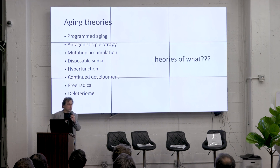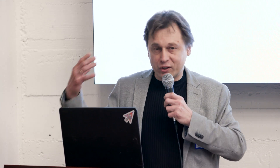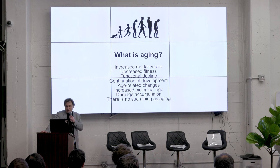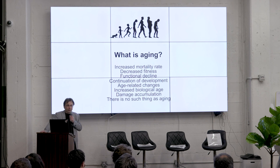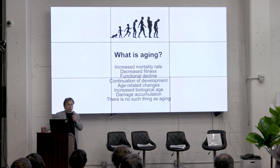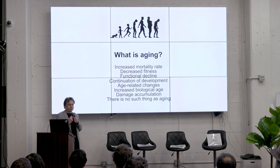So the question is: we have theories of what? What is aging? Is it increased mortality rate? Decreased fitness? Functional decline? Continuation of development? Age-related changes? Increased biological age? Damage accumulation? There's even a paper saying there is no such thing as aging. If you ask people, you'll get different answers. We all think we know what we're working on, but we think differently about it. And if we don't define it, if we don't find consensus, I don't think we can move forward — because we don't know what we are working on, what is our enemy, what we are fighting against.